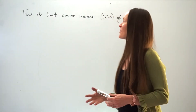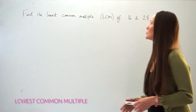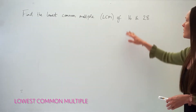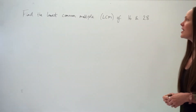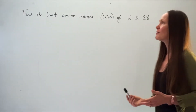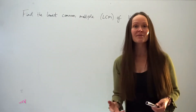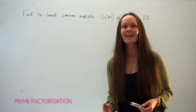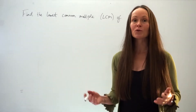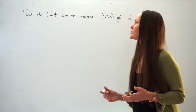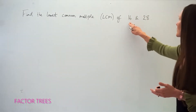To find the lowest common multiple of 16 and 28, I'm going to use a method called prime factorization. The first thing I need to do is draw out two factor trees for each of these numbers.